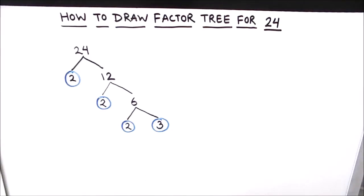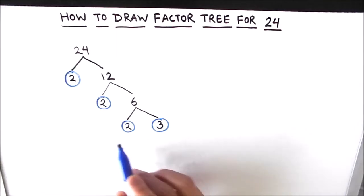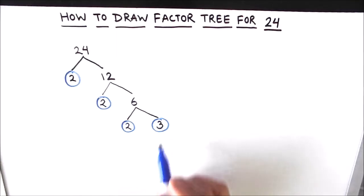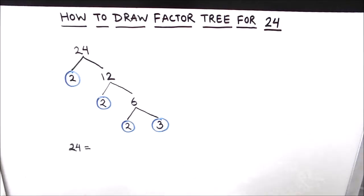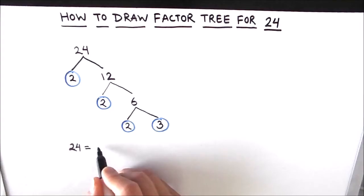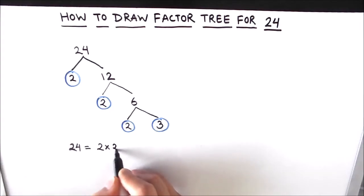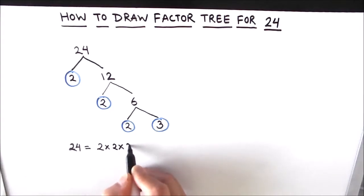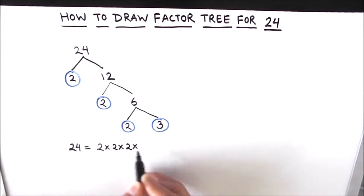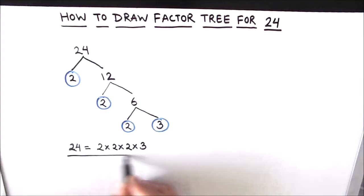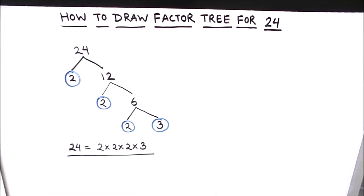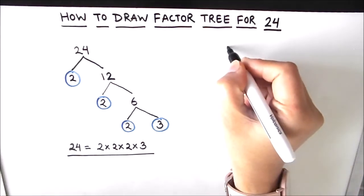These circled numbers are prime numbers and our tree is complete — our path ends here, we cannot break down 2 and 3 further. All the circled numbers are the prime factors of 24. So 2 times 2 times 2 times 3 are the prime factors of number 24. There can be more than one factor tree for the same number.